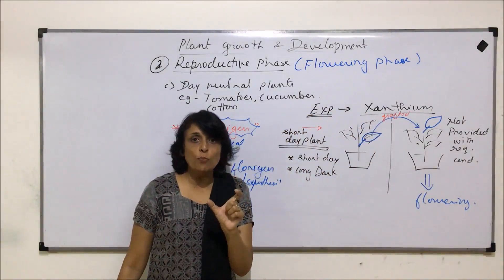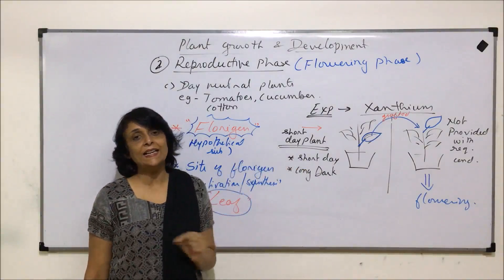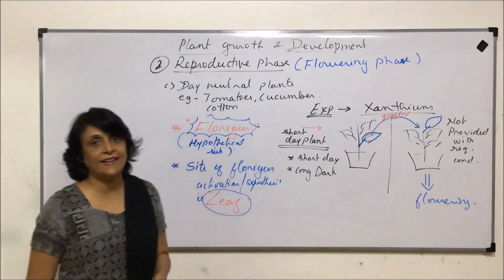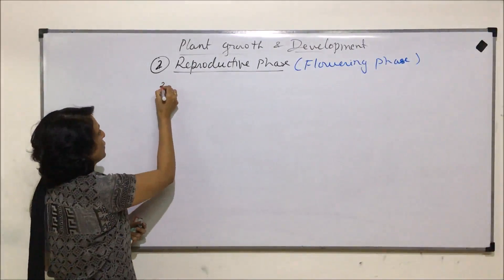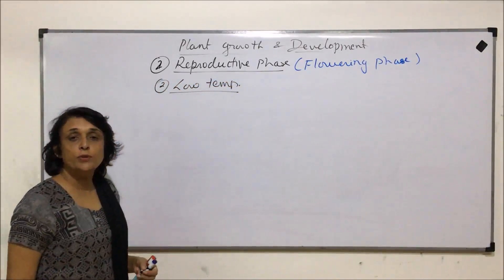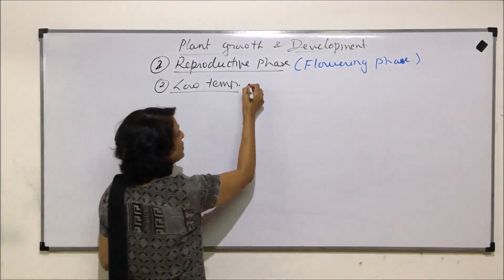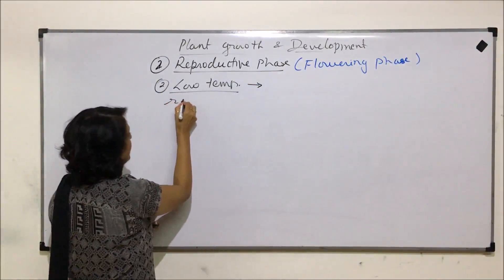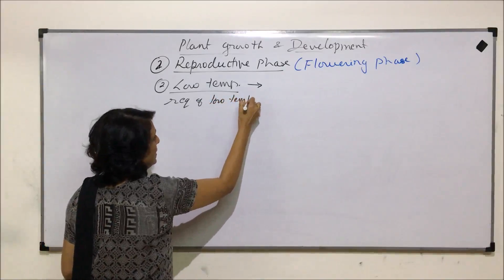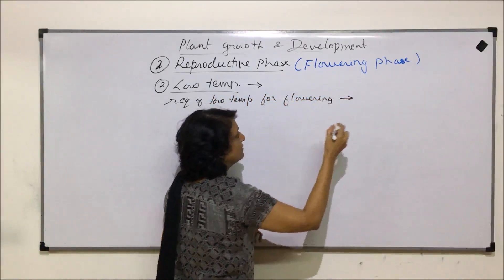So light and photoperiod is an important factor for plants for flowering. The second condition required for flowering is low temperature, known as vernalization. It was observed that when plants are exposed to low temperature, they produce flowers. So the requirement of low temperature for flowering was termed as vernalization.